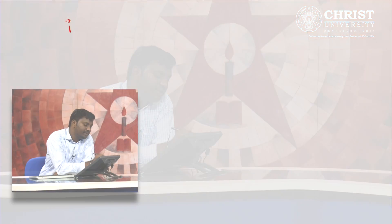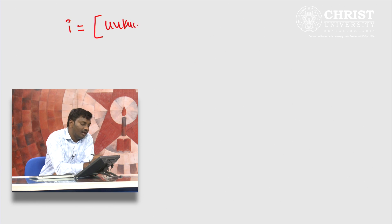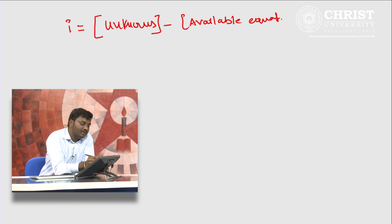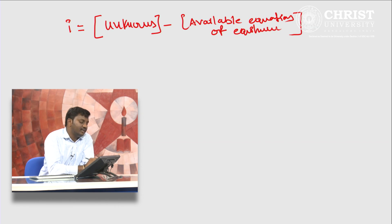Static indeterminacy is usually denoted by the letter I. How to find out this static indeterminacy? Static indeterminacy is nothing but unknowns minus available equations of equilibrium. What are the unknowns in a structure and what are the available equations of equilibrium that we can write in case of a structure — this is the static indeterminacy.